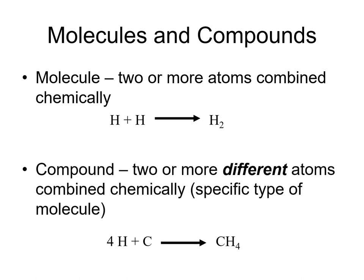A compound is two or more different atoms combined chemically. It is, in essence, a specific type of molecule. For example, here we have four hydrogen atoms and one carbon atom. We can form a bond between carbon and each of these hydrogen atoms to form CH4, or methane. CH4 is a compound because it is composed of two or more different atoms — a carbon atom and four hydrogen atoms — so we have two different types of atoms.